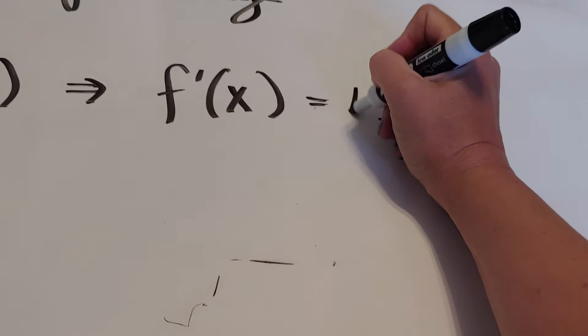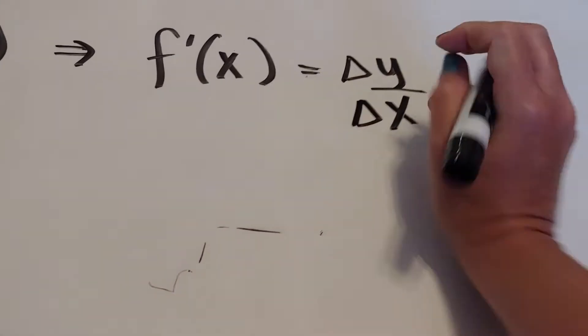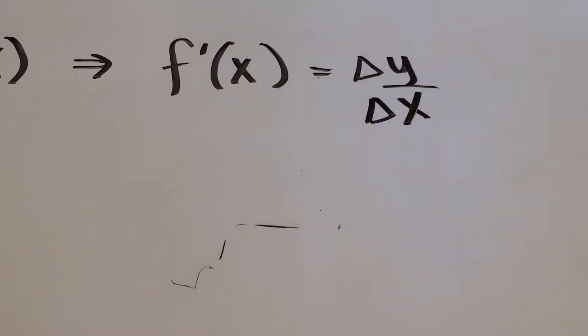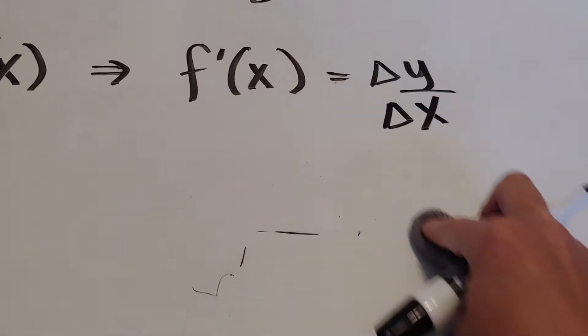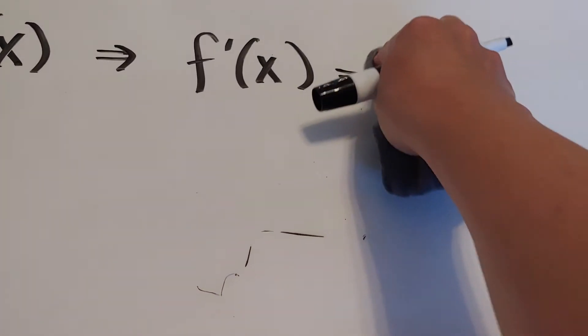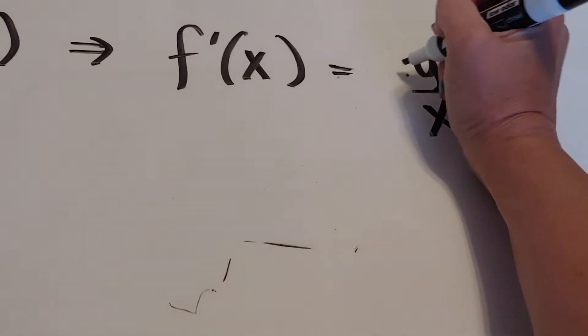Well, in physics, they'll write change as a triangle. But because we're talking about instantaneous change, rather than use the delta triangle, we use d.